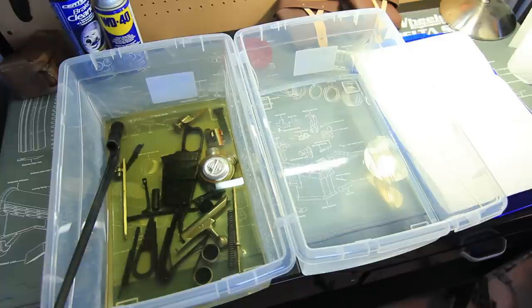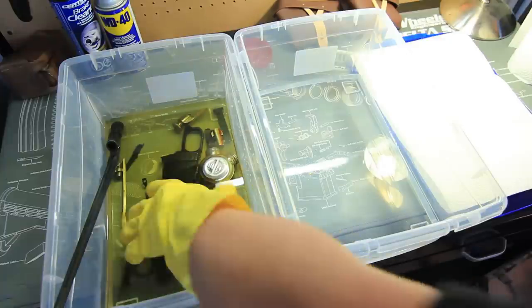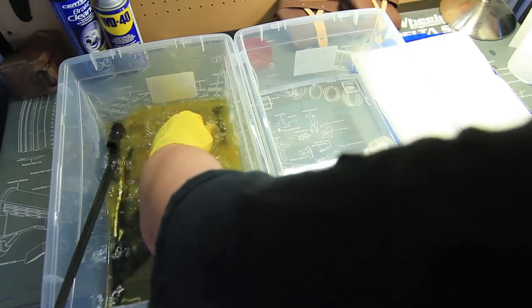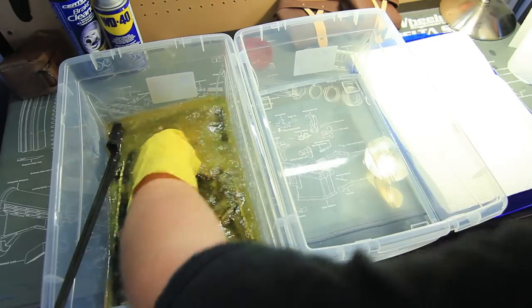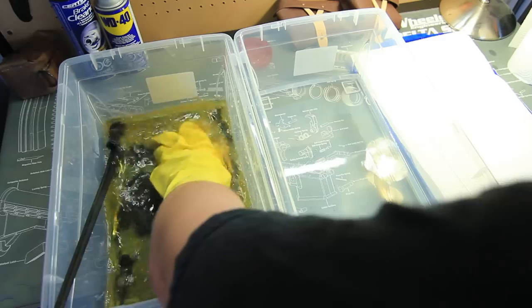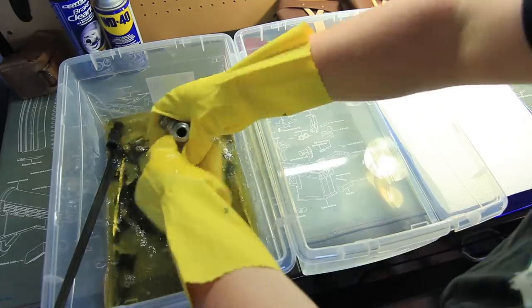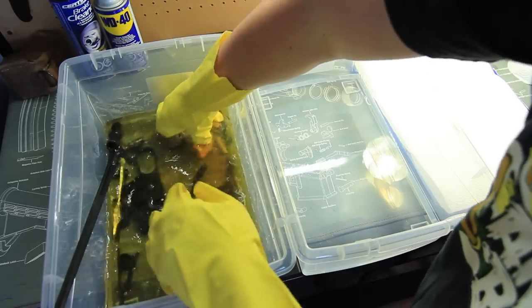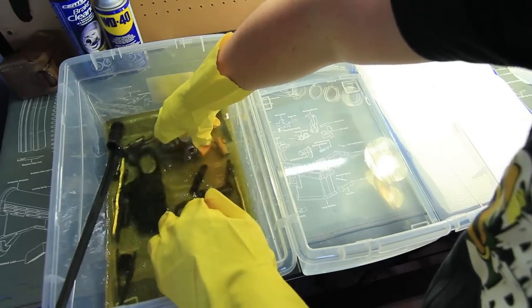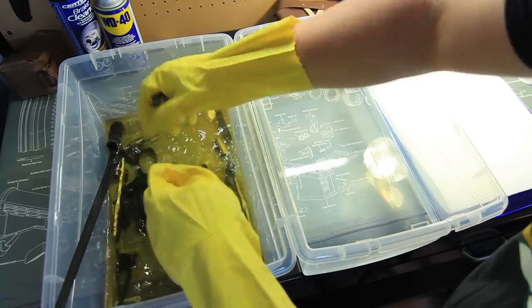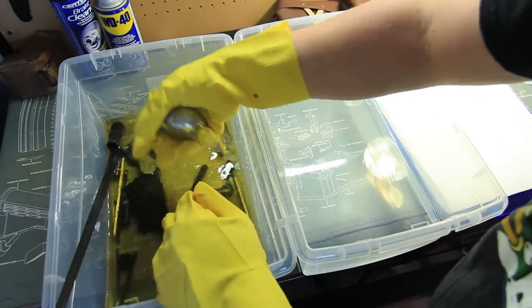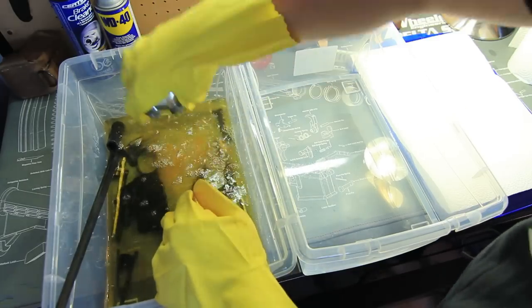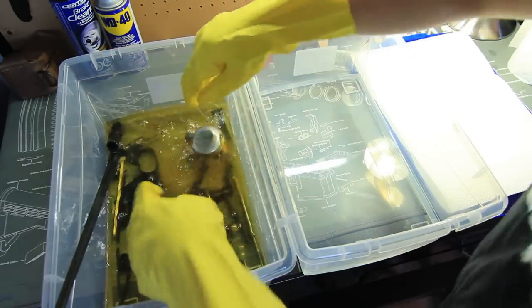You can see just how much of that Cosmoline is actually caked in with all these pieces. So what I do is just kind of shake them around here, try to get any of the loose stuff off, make sure that all the nooks and crannies get a lot of this product in it before I try to wipe it off. And you can just look at the amount of crap coming out of there, that's just crazy.